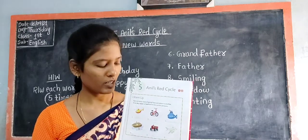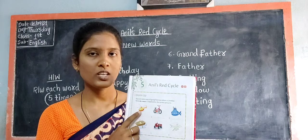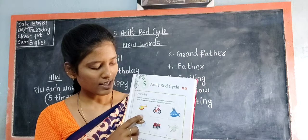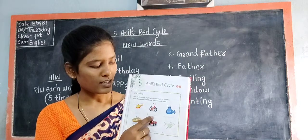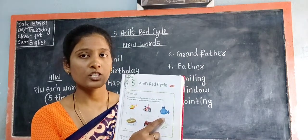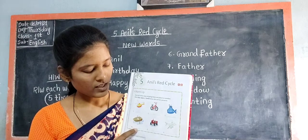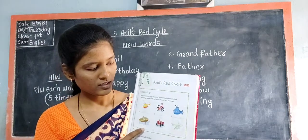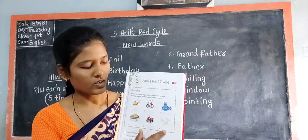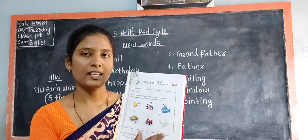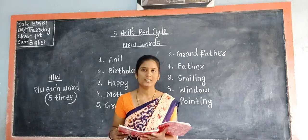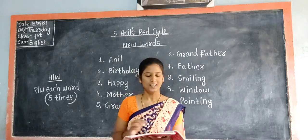Let me repeat the answers one more time. The first picture is of helicopter — sky. Second answer is land. Third answer is water. Fourth answer is water. Fifth answer is land. And sixth answer is sky. Okay children, that was all about the warm-up activity. Now let us move towards the lesson.